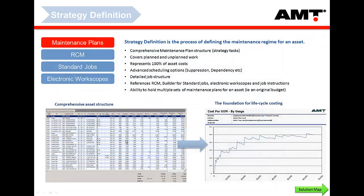Strategy definition is about setting up what we call your projections and strategy tasks — often referred to as maintenance plans. It's your standard life cycle costing structure, similar to what people have seen in Calculator or Analyzer. You've got all of your strategy tasks listed: your components, your PM services, any item that has a frequency and cost associated with it. This is really the heart of the life cycle costing within AMT.